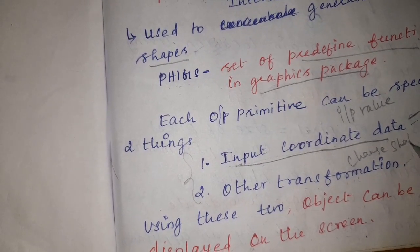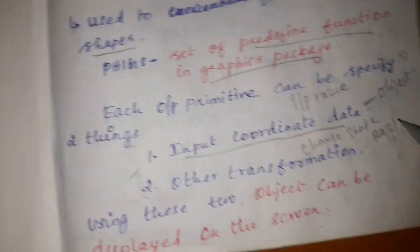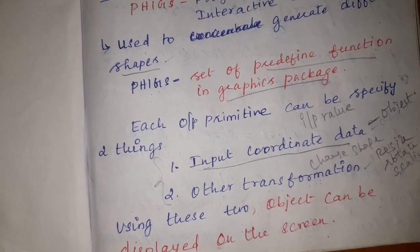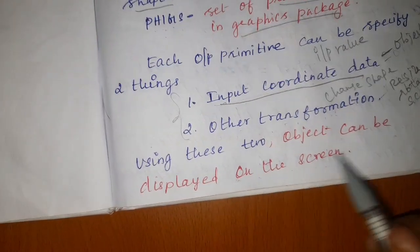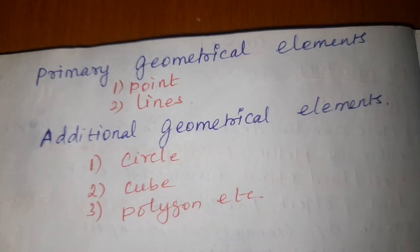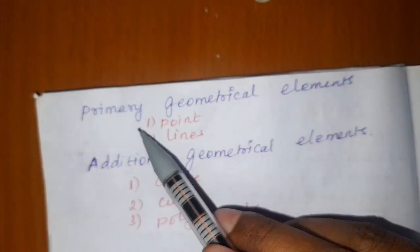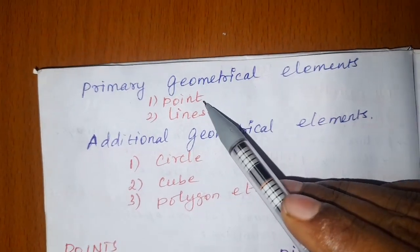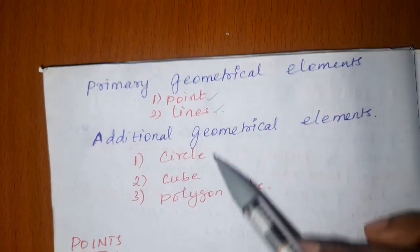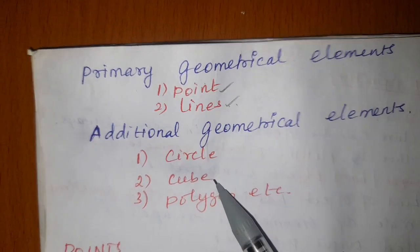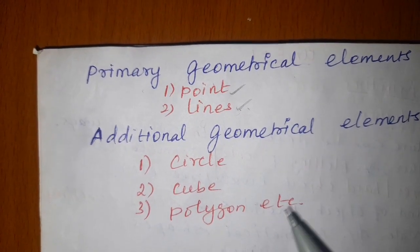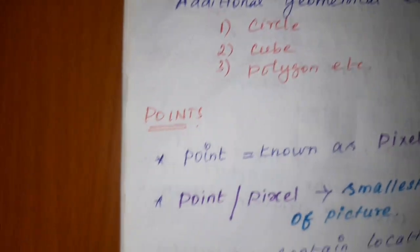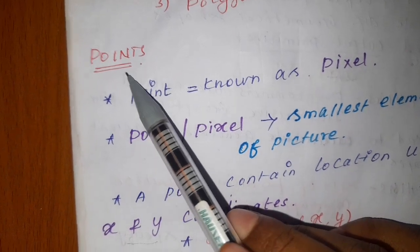The second thing is other transformations. Transformation means changes in the shape, such as resize, rotate, or scaling. These two things — input coordinate data and transformations — are used to display the object on the screen. There are two types of geometrical shapes: primary geometrical elements, which are points and lines, and additional geometric shapes such as circles, cubes, and polygons.